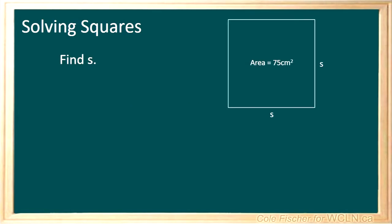Here we have a square with unknown side lengths S and an area of 75 cm squared. We can start off by writing the formula for the area of a square: area is equal to the side length S squared.